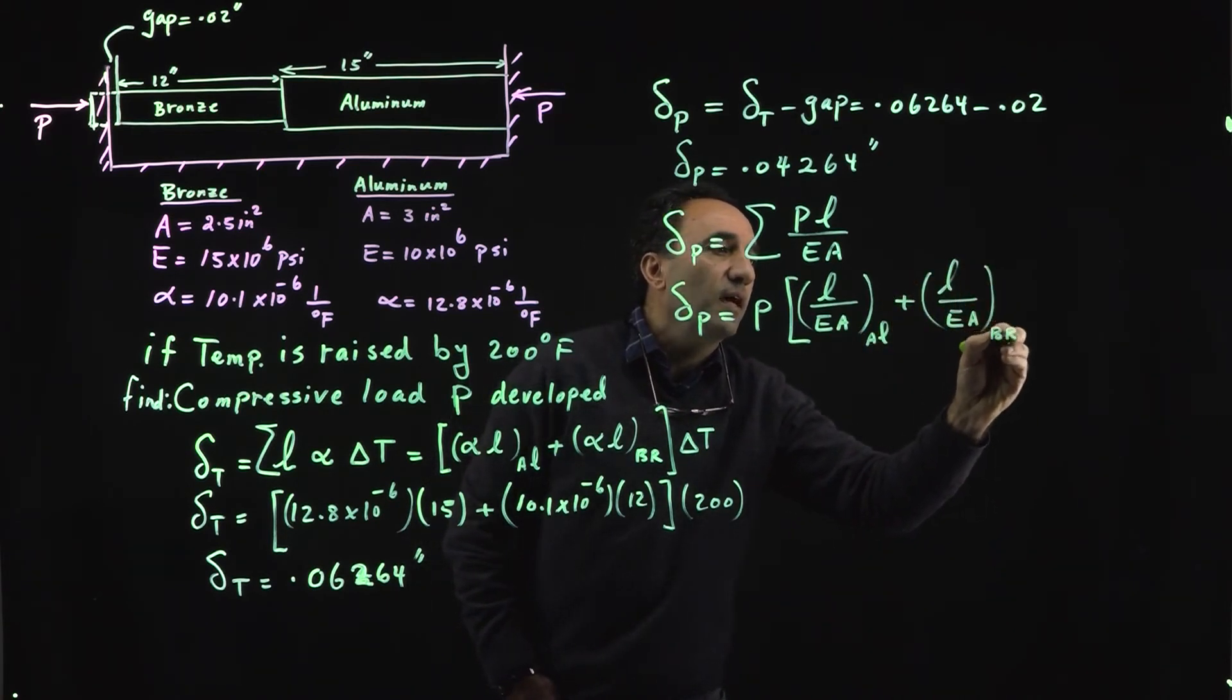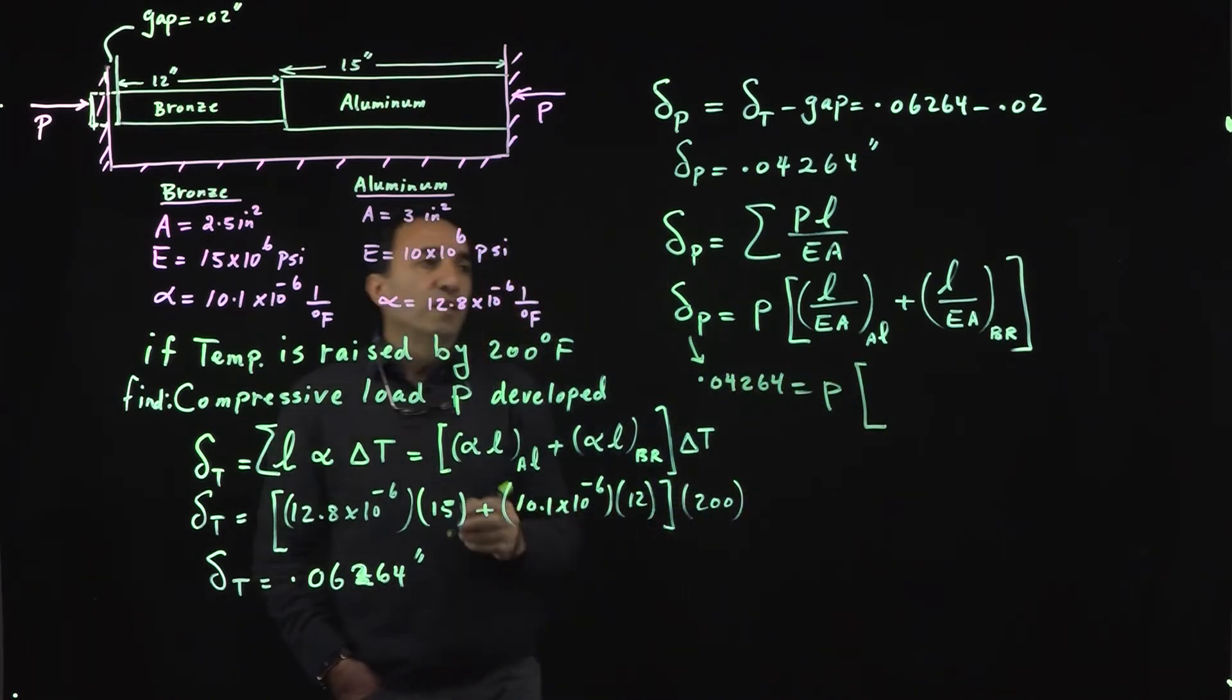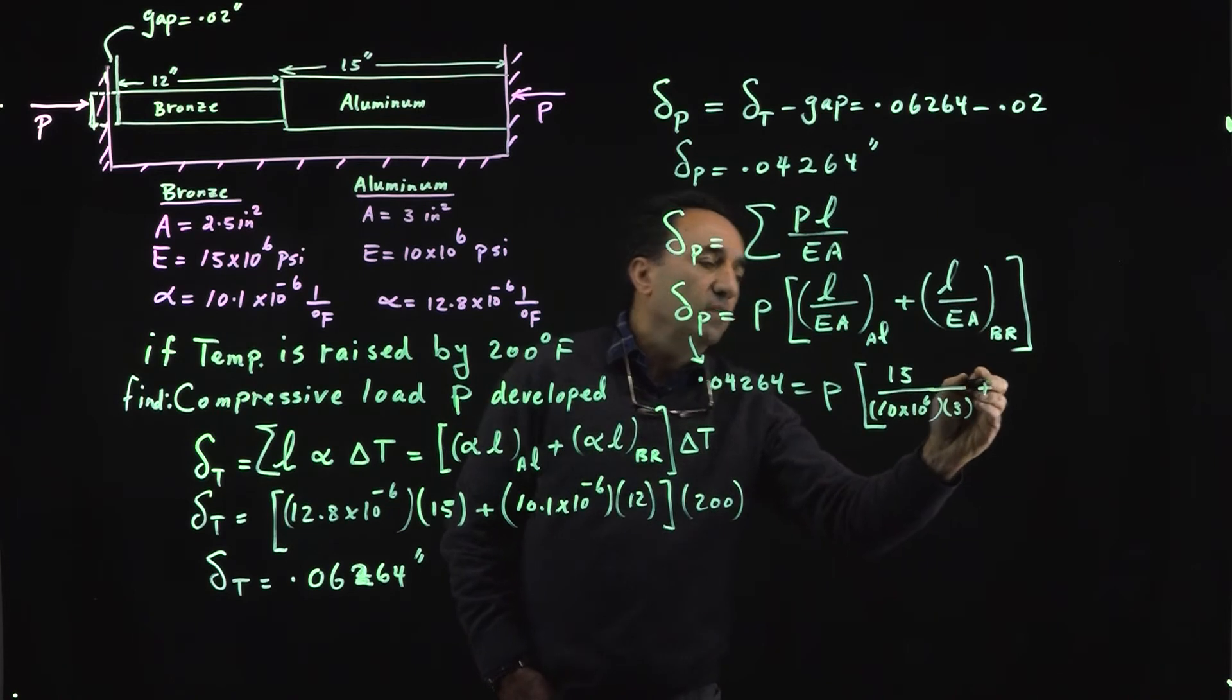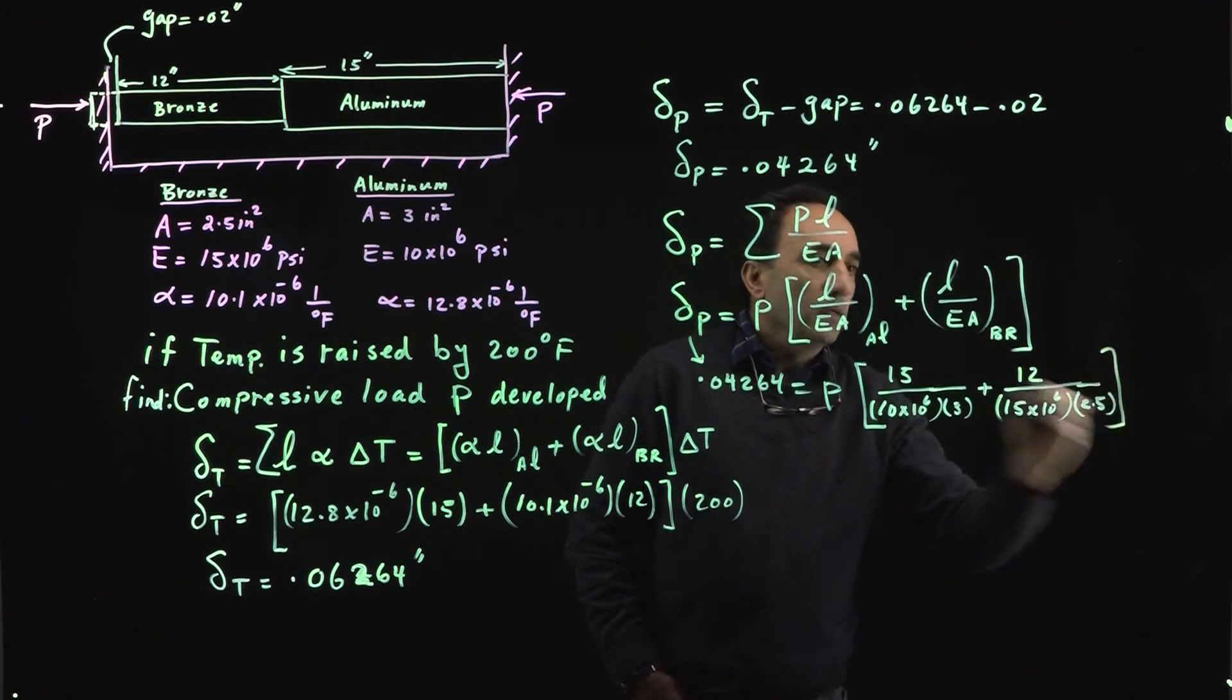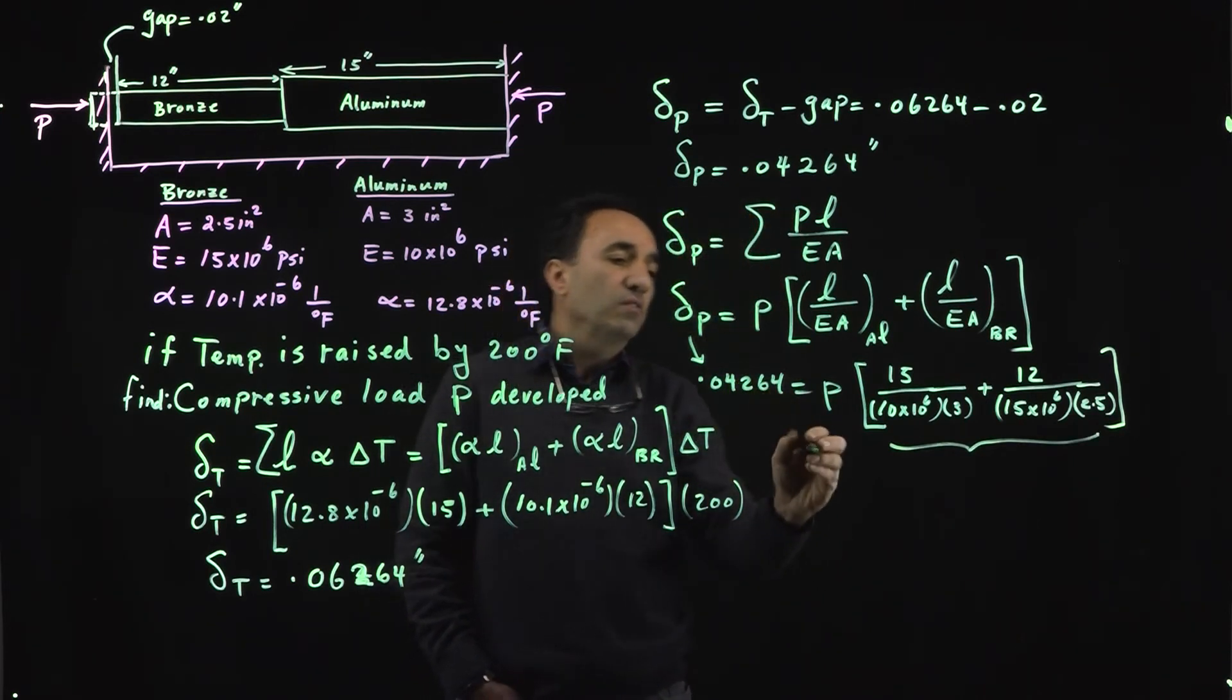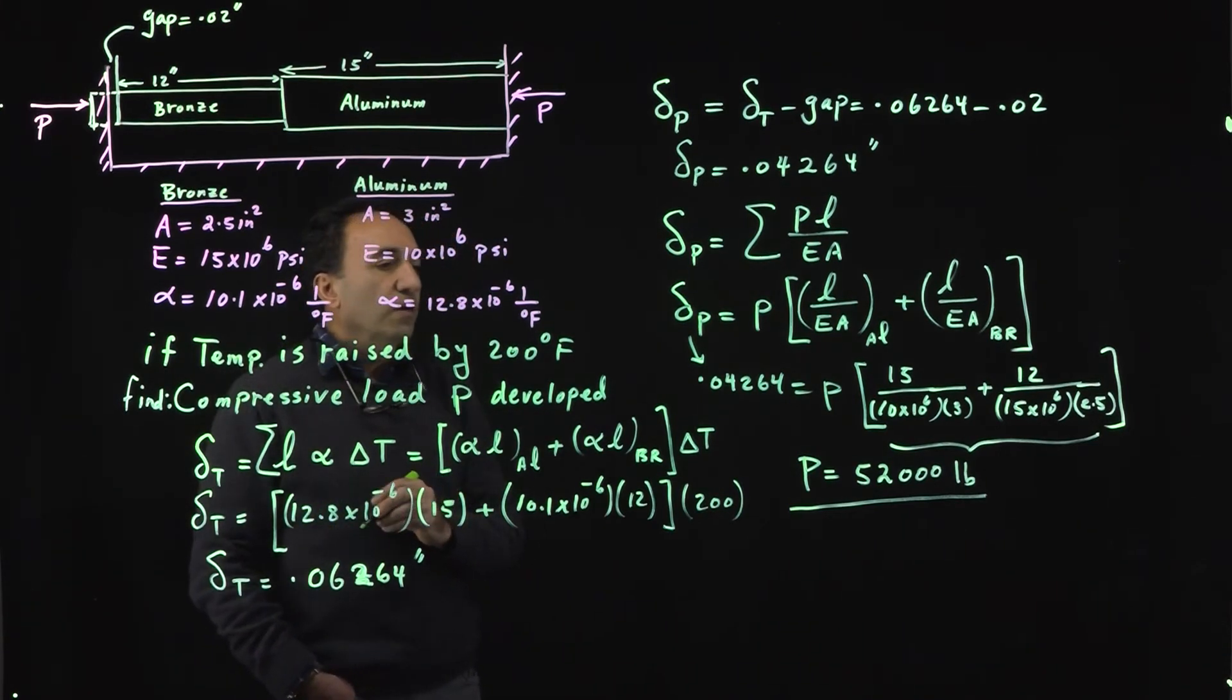From here it's just a quick plug-in. You already know what delta P is, that's 0.04264, you call P, and we have everything else. The length of aluminum is 15 inches divided by modulus of elasticity of 10 million psi and an area of 3 inches squared. The length of the bronze is 12 inches, modulus of elasticity of 15 million psi, and a cross sectional area of 2.5. The only unknown here is P. Figure out what the bracket is, divide, put it underneath here and solve for P.